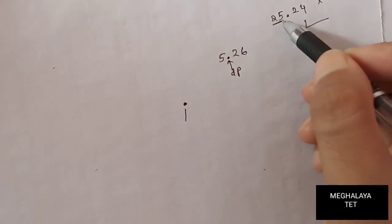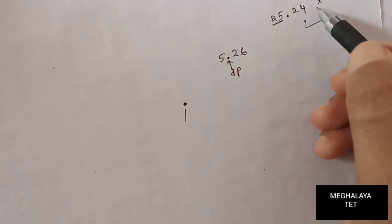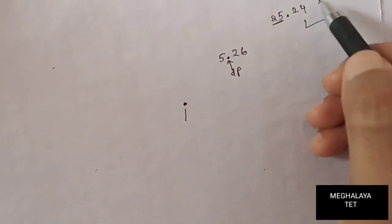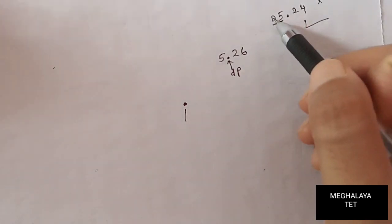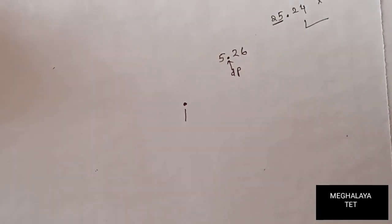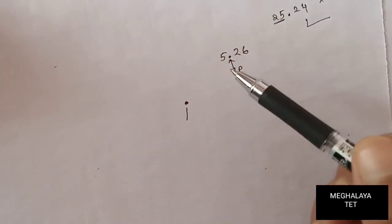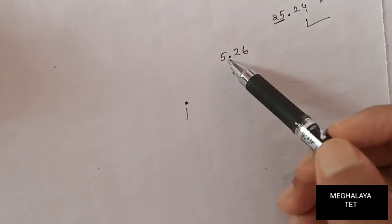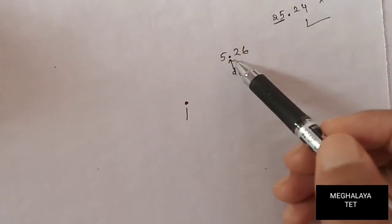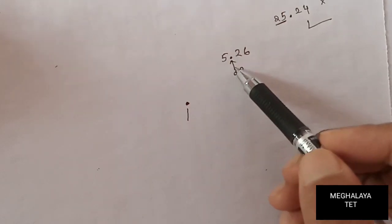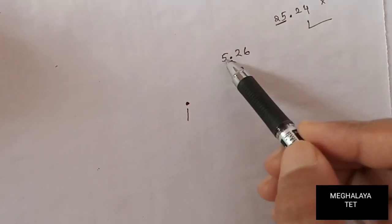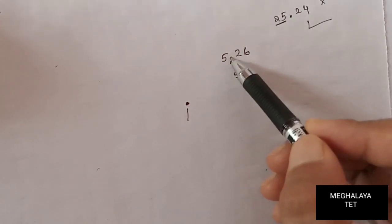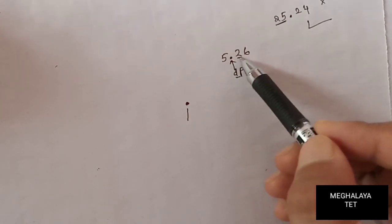25.24 is wrong — we have to say 25.24. Let's get back to the same concept where we understand the decimal point. After the decimal point we have specific place values — for example, 5.26 has a 2 and then a 6 after the decimal.